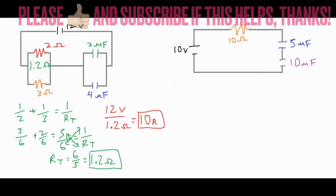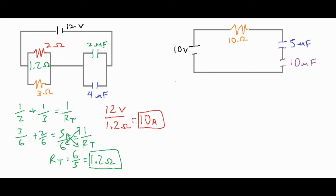After the current has run for some time, the plates on our capacitors are going to start to get charged up, and we won't have any current flowing through these resistors after some time has passed. Because the capacitors are wired up in parallel, the total capacitance is simply the sum of each one — two plus four equals six microfarads.